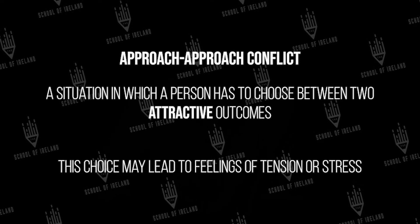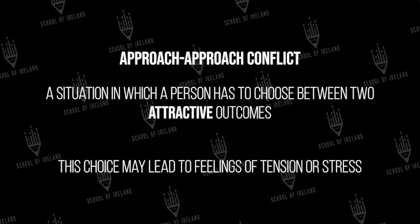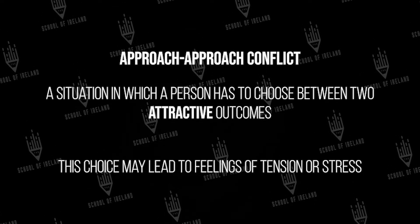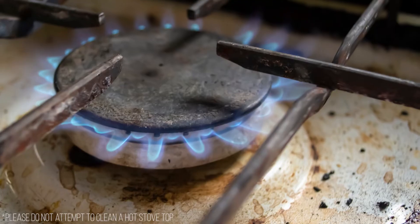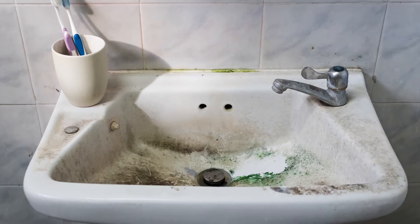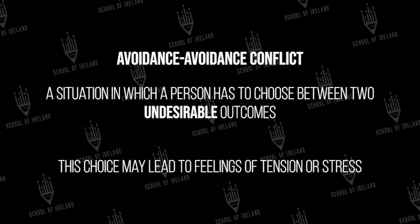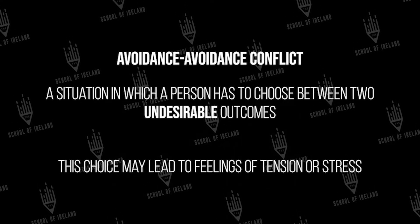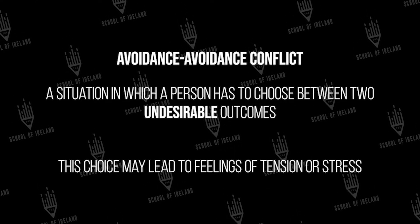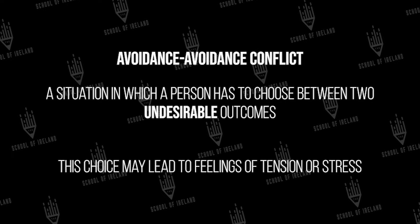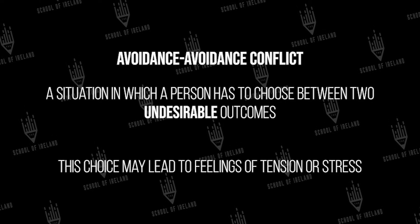As a result of this conflict, we may feel tension or stress when having to choose between the two options. However, not every decision we make is a choice between two attractive outcomes. For example, if your parents say you either need to clean the kitchen or clean the bathroom, both of which you hate, this is an example of an avoidance-avoidance conflict, which is a situation in which a person must choose between two undesirable outcomes.